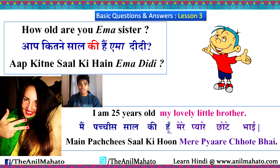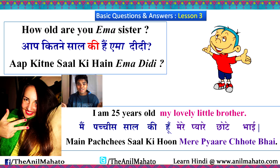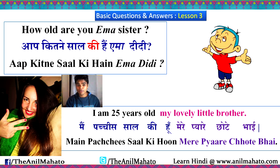The girl answers very properly: 'main pachish saal ki hun, mere pyaare chhote bhai' — I am 25 years old, my lovely little brother. So that is how a girl answers. Full example: 'aap kitne saal ki hain, Emma didi?' — 'main pachish saal ki hun, mere pyaare chhote bhai.'